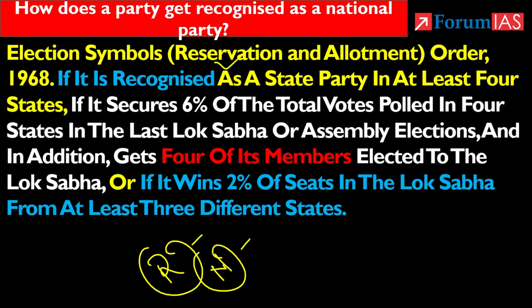A party gets national party status when they fulfill three conditions. The first condition is: if it is recognized as a state party in at least four states.